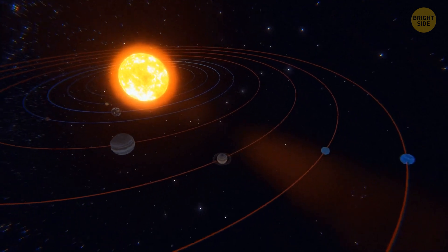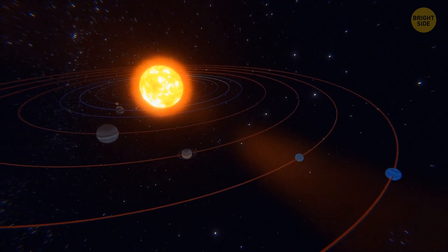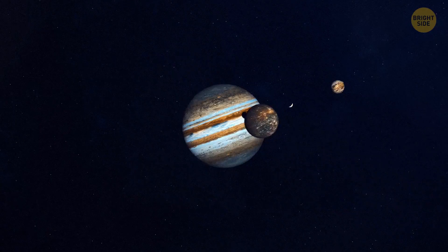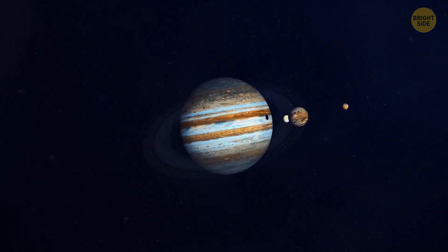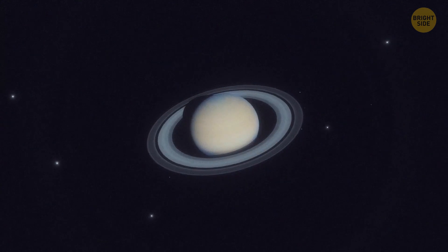So maybe the inner planets were more protected from potential collisions that could have formed their rings. There are also more moons in the outer regions of our solar system, which could be another reason why the planets there have rings.